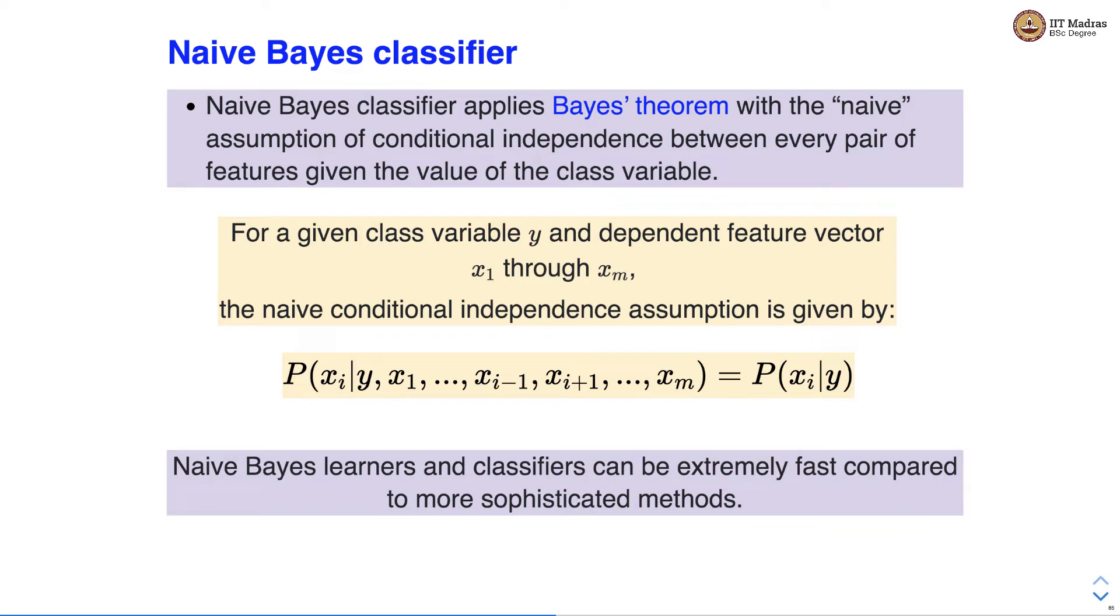Naive Bayes learners and classifiers can be extremely fast compared to more sophisticated methods.